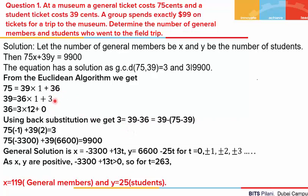Now we do the back substitution, starting from here and leaving the term where there is a 0. 3 is nothing but 39 minus 36. From this equation, we replace 36 by 75 minus 39. When we arrange the terms, we get 75×(−1) + 39×2 = 3. If we simplify the left hand side, we see it equals 3, which is the GCD. Here we have used the theorem which states that if we are given two integers, we can always write them as a linear combination of the GCD.